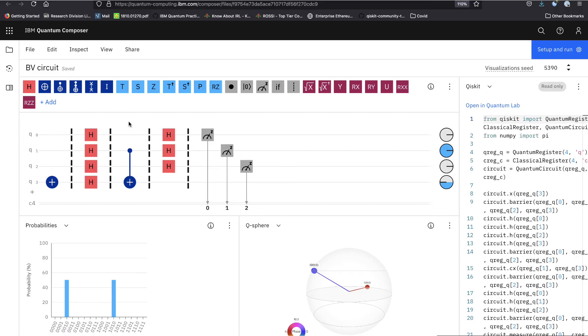So, the implementation of Oracle is straightforward. If for whichever bits A is 1, we have a CNOT with that particular bit as control and the ancilla, the last qubit as target.